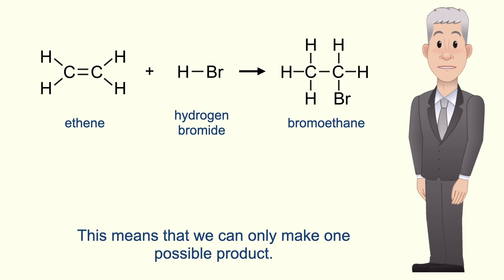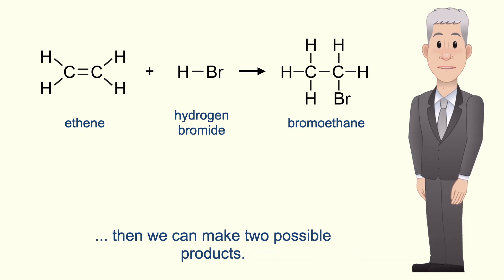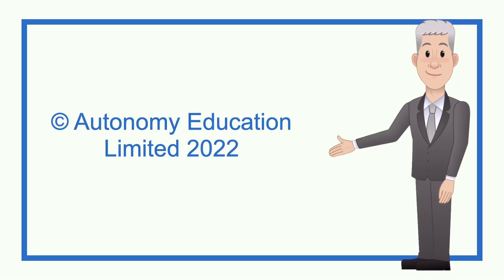The alkene in this reaction is ethene, which is a symmetrical molecule. This means that we can only make one possible product. However, if we carry out this reaction with an asymmetric alkene such as bute-1-ene, then we can make two possible products, and we're going to look at that in the next video.